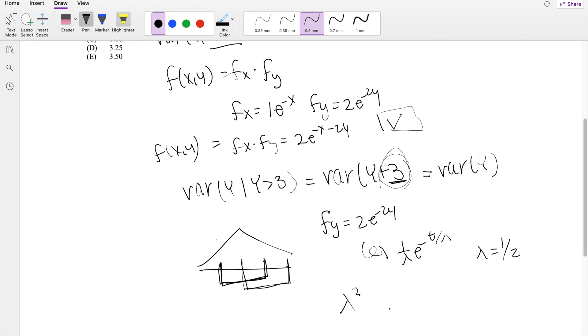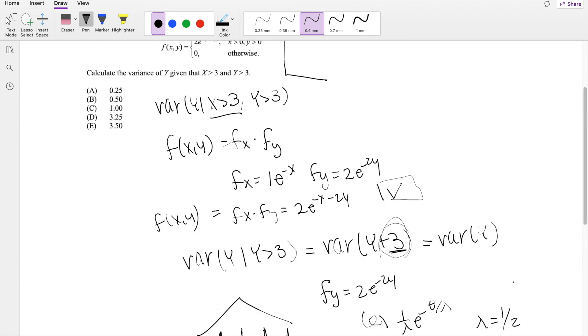So the variance of y is simply just going to be lambda squared. Because we know for exponential functions, the variance is just equal to lambda squared. So taking that, it's going to be 1 half squared, which is equal to 1 over 4, which is equal to 0.25, which is our answer A.